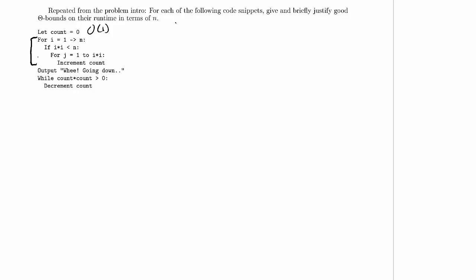And then we're going to output wiii, going down. And then while count squared is greater than 0, we're going to decrement count. So we've got another loop down here, and let's handle the loops in order this time. We'll handle the first loop before the second, because the second one has maybe gotten slightly more complex with this count squared thing.